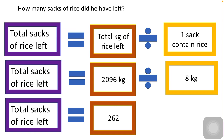The answer we get is 262. Always remember: when you have a large amount of kg and you have to group it into sacks or packets, you are making groups — so you always divide by the amount one sack contains. Whenever this situation occurs, you always use the division operation. The final answer is 262 sacks. That's it from my side — if you have any comments, kindly post them below. Thanks!